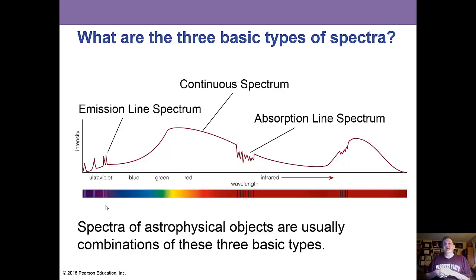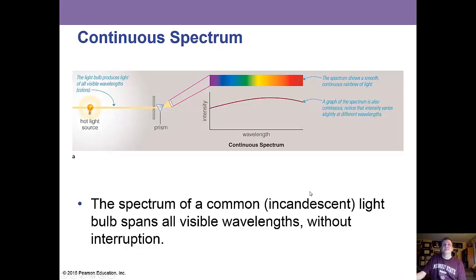This line on the screen is a spectrum. If we have bright peaks in it, these are called emission lines. A continuous spectrum shows all the colors with no lines — like the spectrum of a common incandescent light bulb, which spans all visible wavelengths without interruption. Take that light through a prism and you see a rainbow — that's a continuous spectrum.